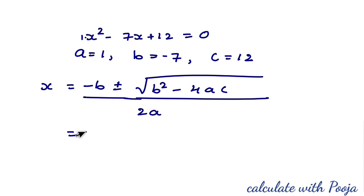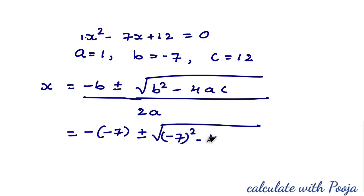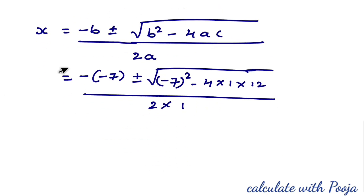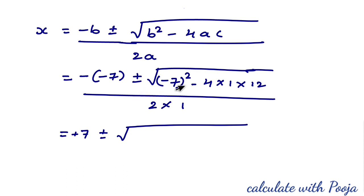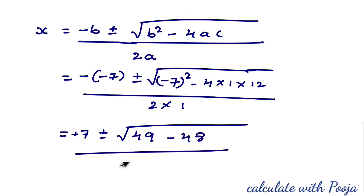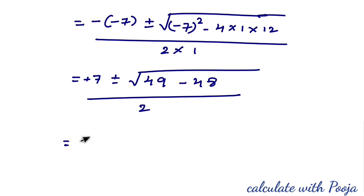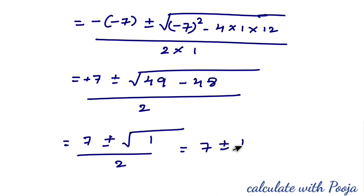Substituting values: x = (−(−7) ± √((−7)² − 4×1×12)) / (2×1) = (7 ± √(49 − 48)) / 2 = (7 ± √1) / 2.